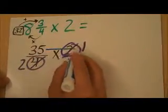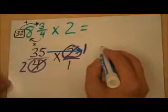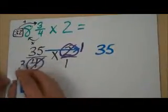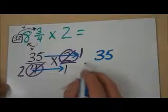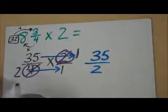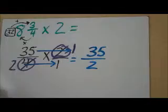Multiply across this time. 35 times 1 would be 35 and 2 times 1 will give me 2. Now, I'm not done quite yet.